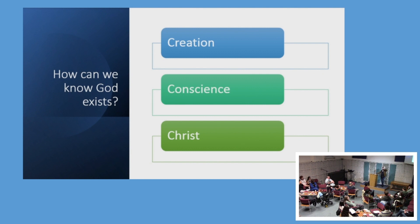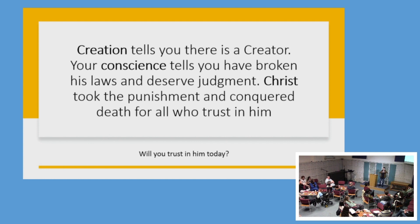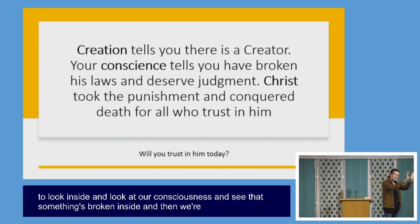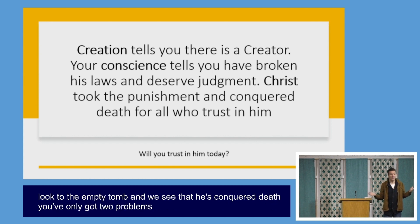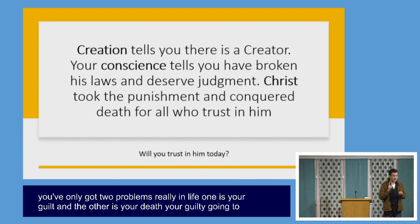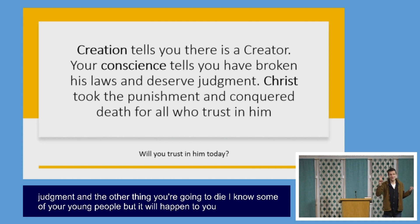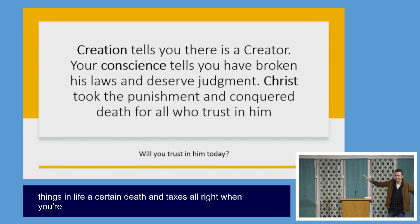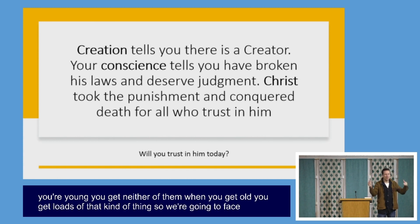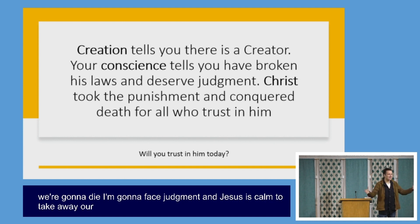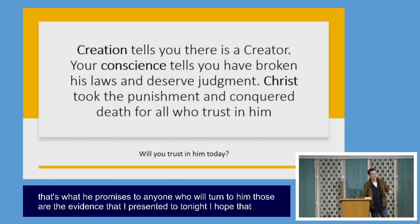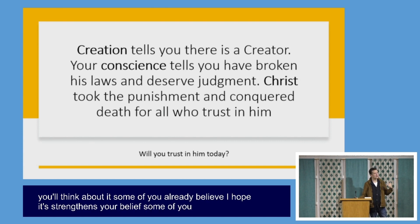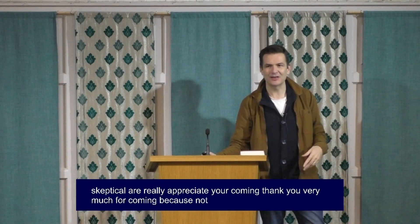So we have an encouragement in the Bible: if we are willing to look at creation and see that what is created points to a creator; if we're willing to look inside at our consciences and see that something's broken; and if we're willing to look up to Christ hanging on the cross taking away our sin — and then look to the empty tomb and see that he's conquered death — we've only got two problems really: guilt and death. Jesus has come to take away our punishment and give us eternal life. That's what he promises to anyone who will turn to him. Those are the evidences I presented tonight; I hope you will think about it.